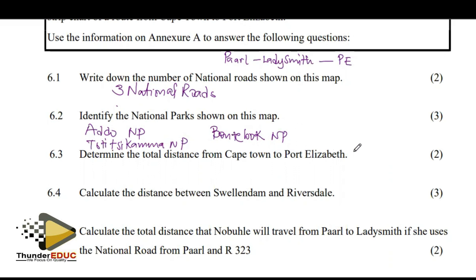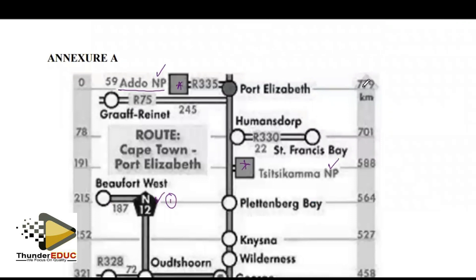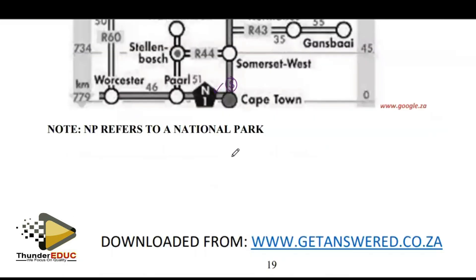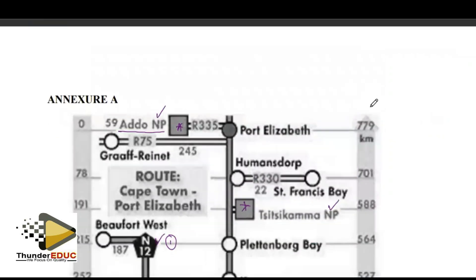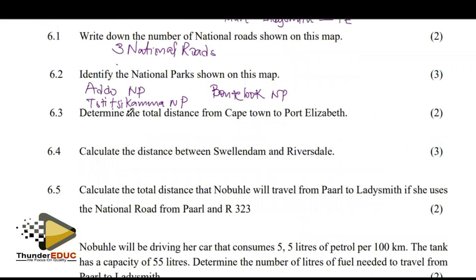Determine the total distance from Cape Town to PE. This is PE up here, and it comes from Cape Town. It's from 0 to 779 kilometers. So you write there and say: 779 kilometers.